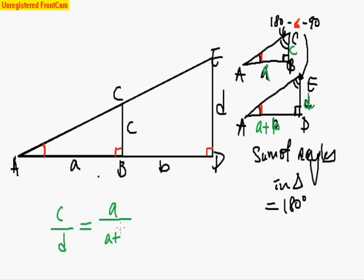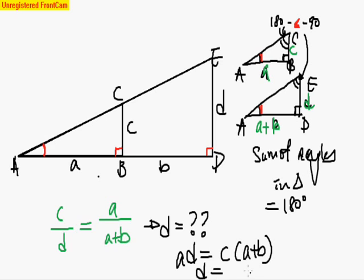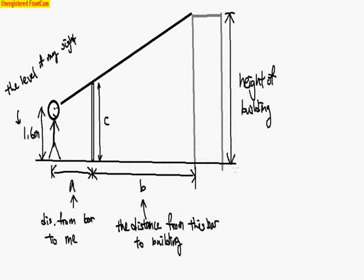As you can see, right now we have this relationship over here. And if we are solving for this length, then we basically just have to solve for D equals to an expression. If I solve it by cross multiplication, then you will have A times D equals to C times A plus B. Then D would be C times A plus B divided by A.